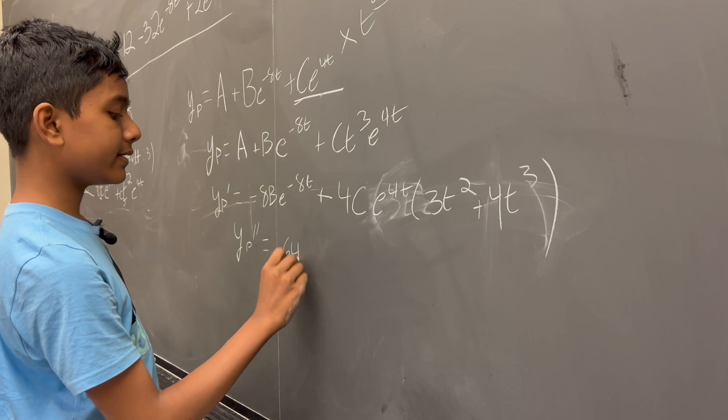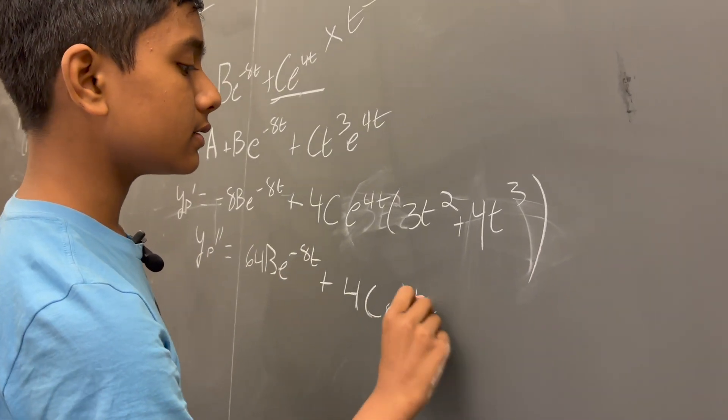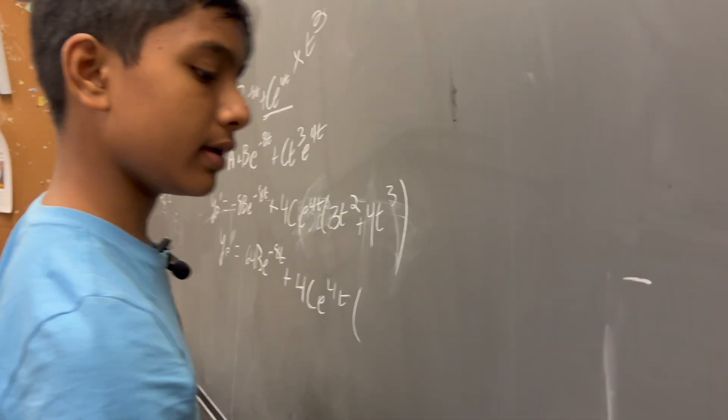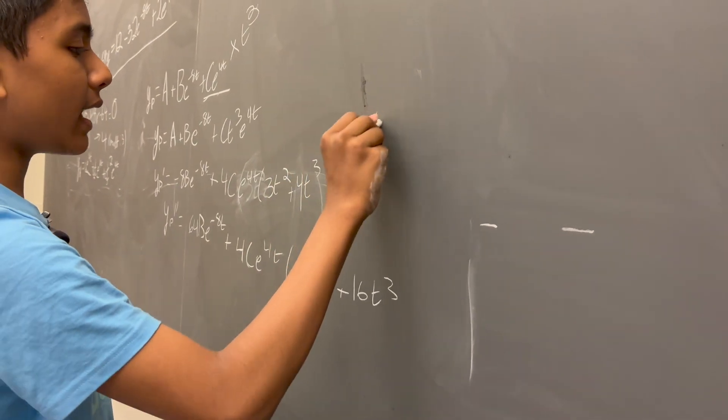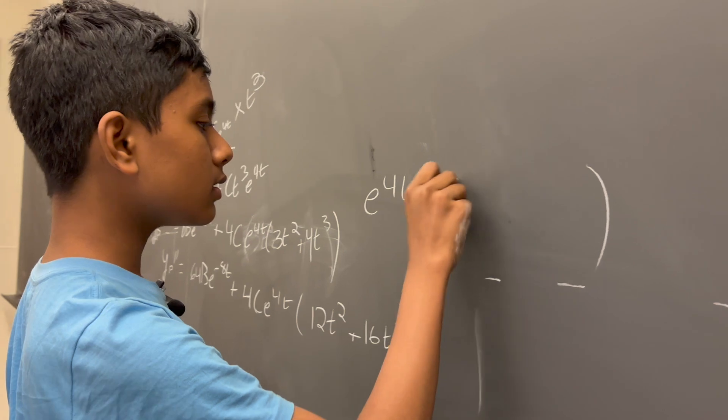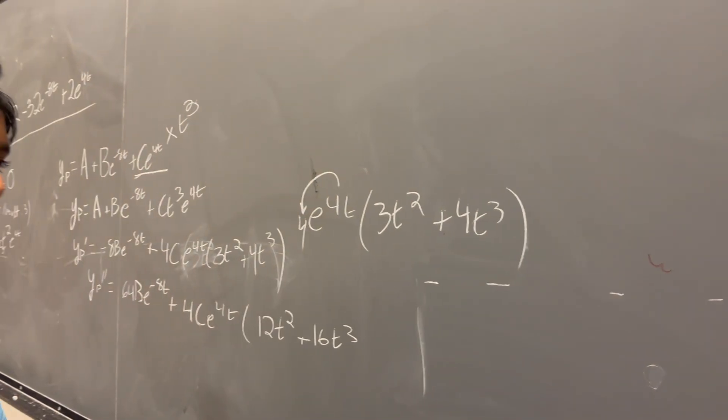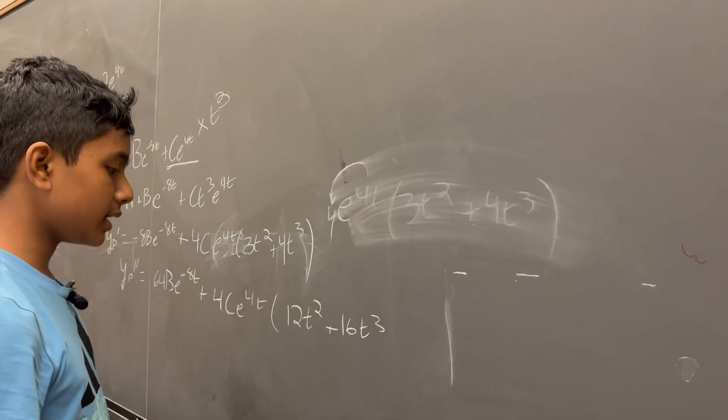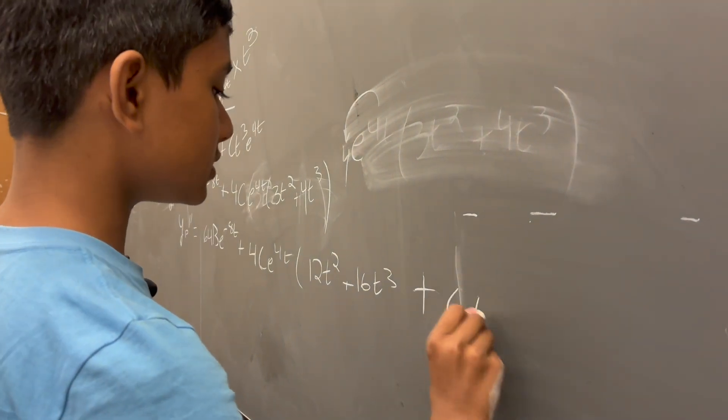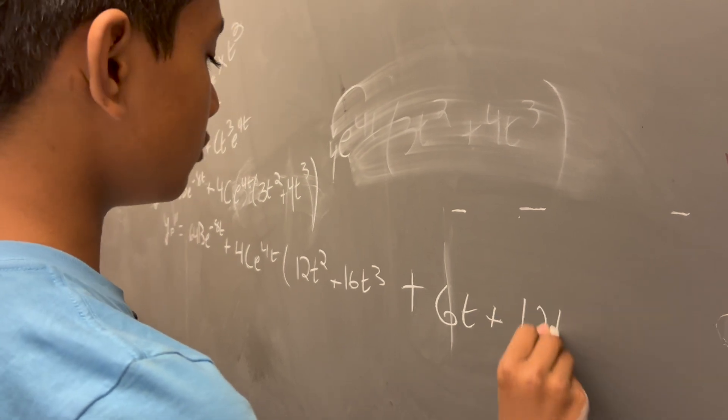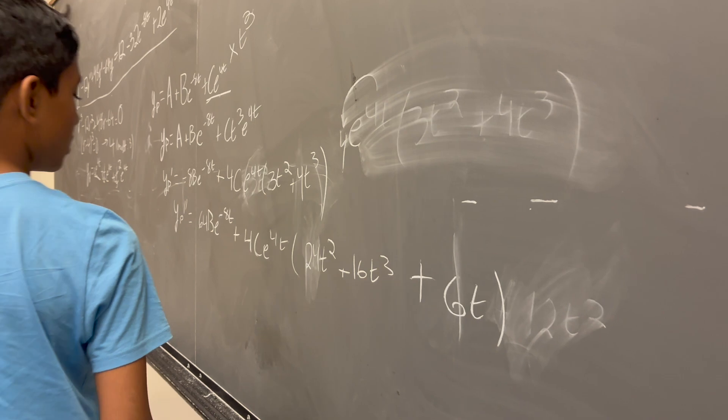Now, we just take the double derivative, which gives us 64B e to the minus 8t, plus, of course, 4Ce to the 4t times... Now, all we need to do is take the old one, multiply it by 4. And of course, why is that? Because this is the first term of our product rule. So, in this one, all we're doing is not taking the derivative of this part, but instead of this part, which means that the exponent goes down. So we multiply it by 4. Okay, pretty easy to understand. And then, we have the next part of it, which is going to be where we take the derivative of this. Instead, it's just 6t plus 12t squared, which I'm going to add right over here to get this polynomial.